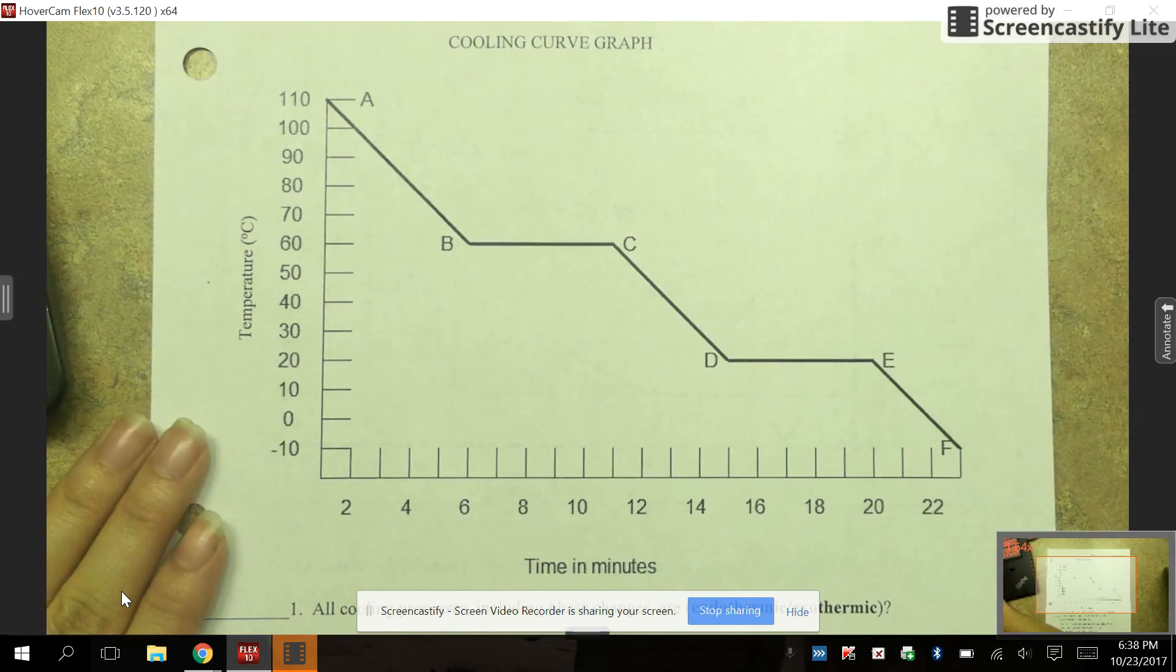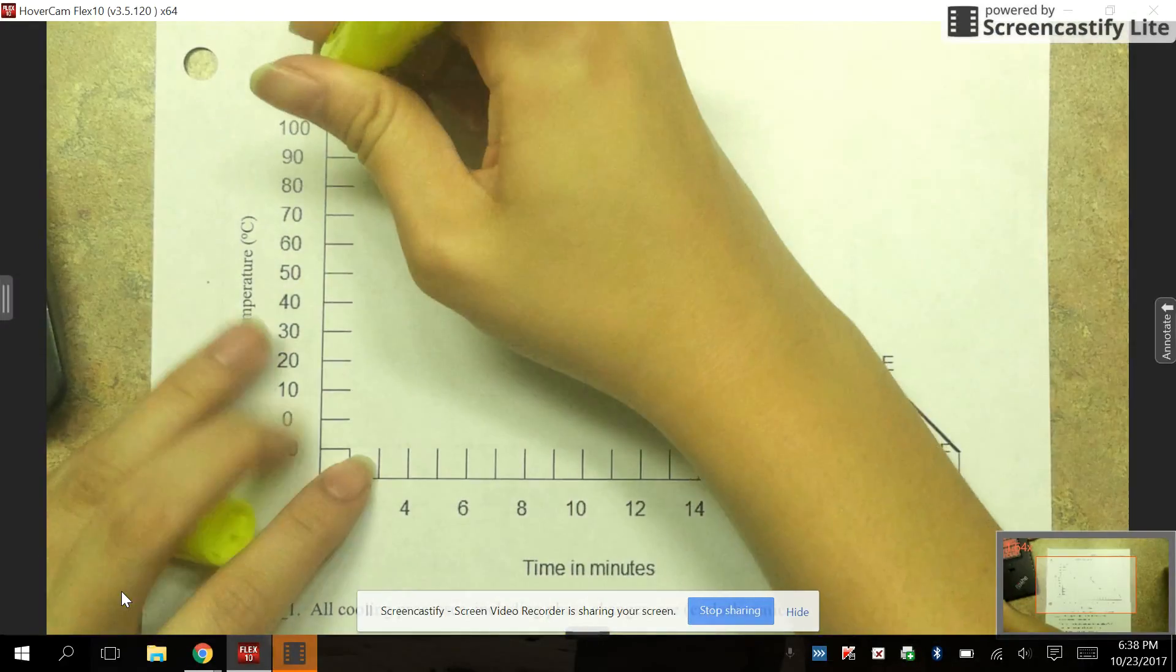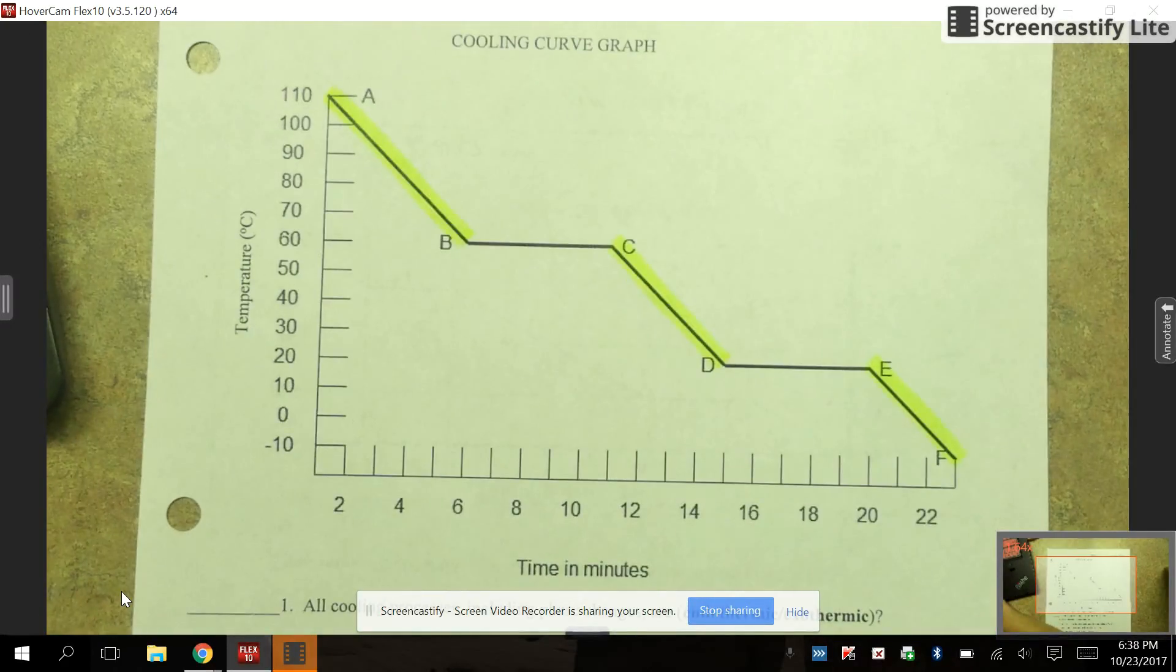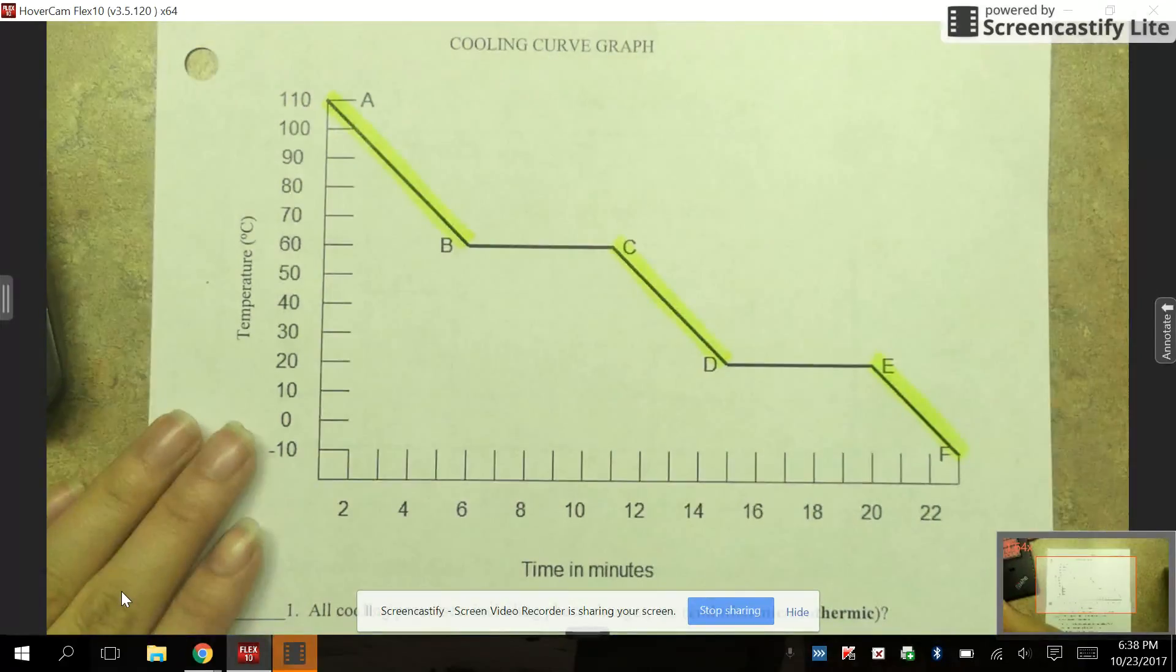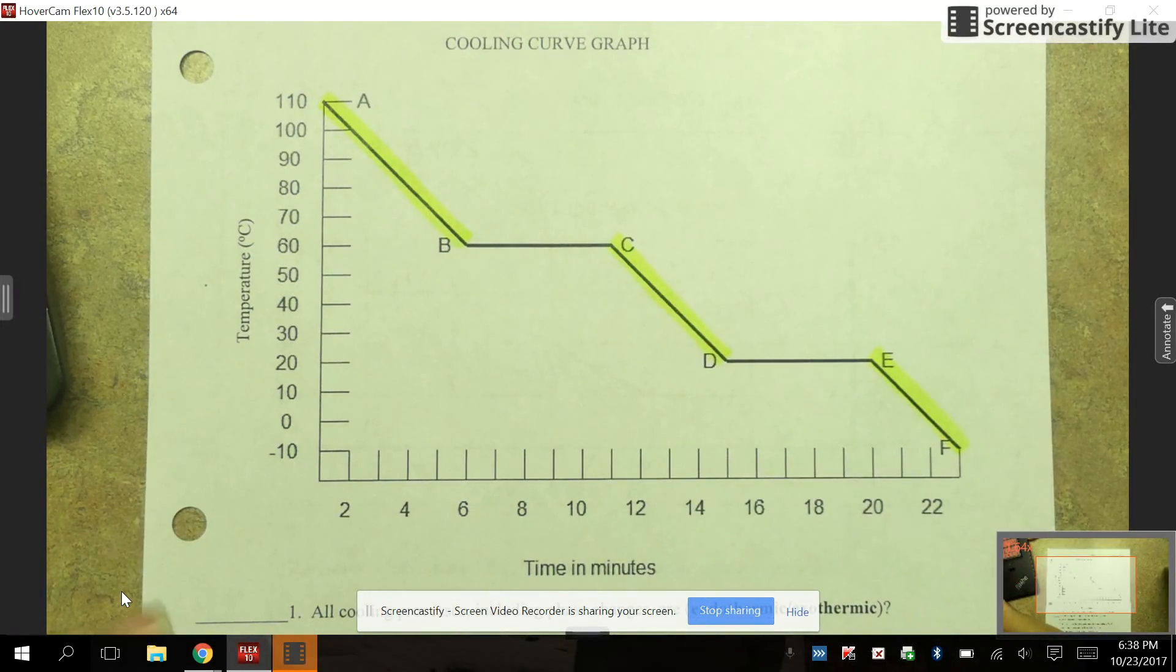The first thing that we have here is you're going to notice we have some slanted lines on our chart. So I'm going to highlight these with a highlighter. You can also if you would like. So basically what these slanted lines represent are phases. So remember we've got three different phases. We have solid, liquid, and gas.